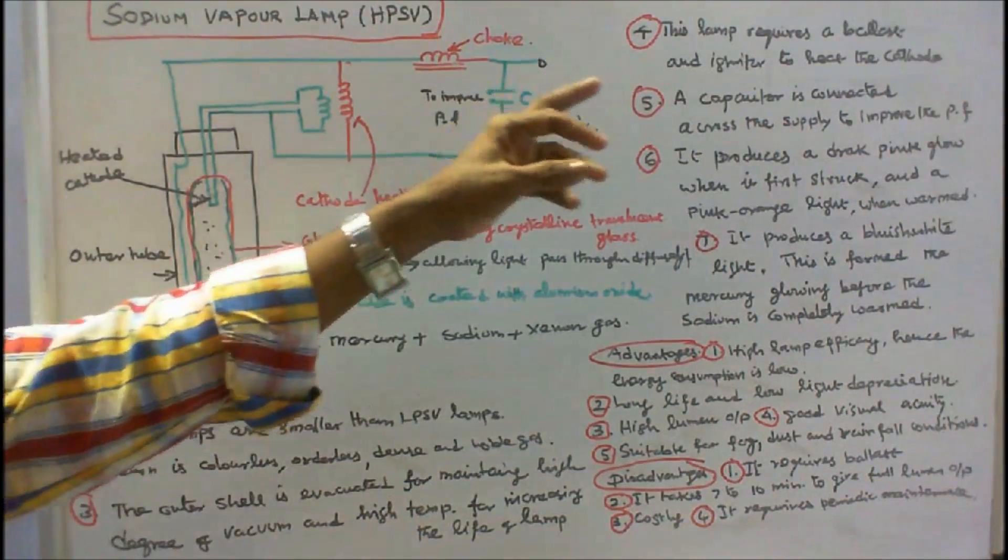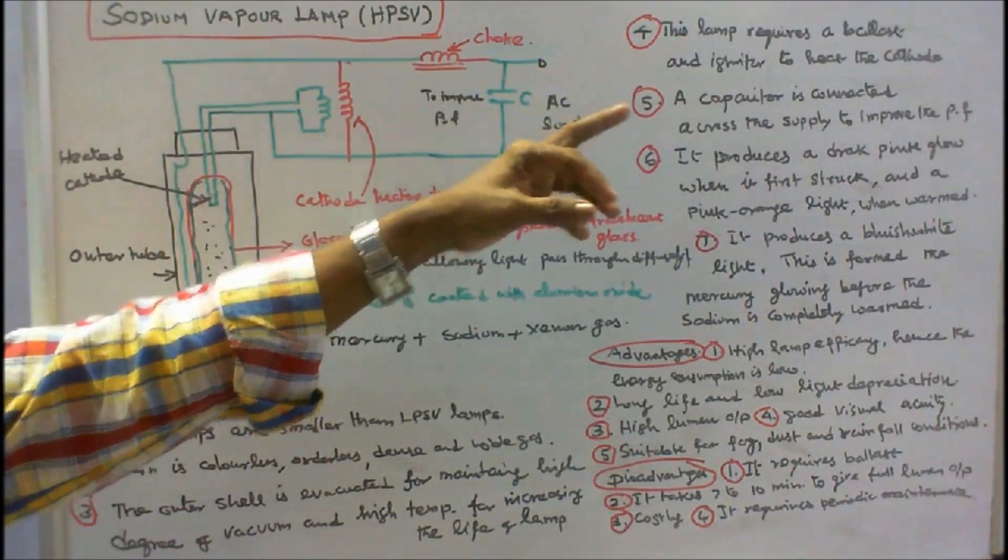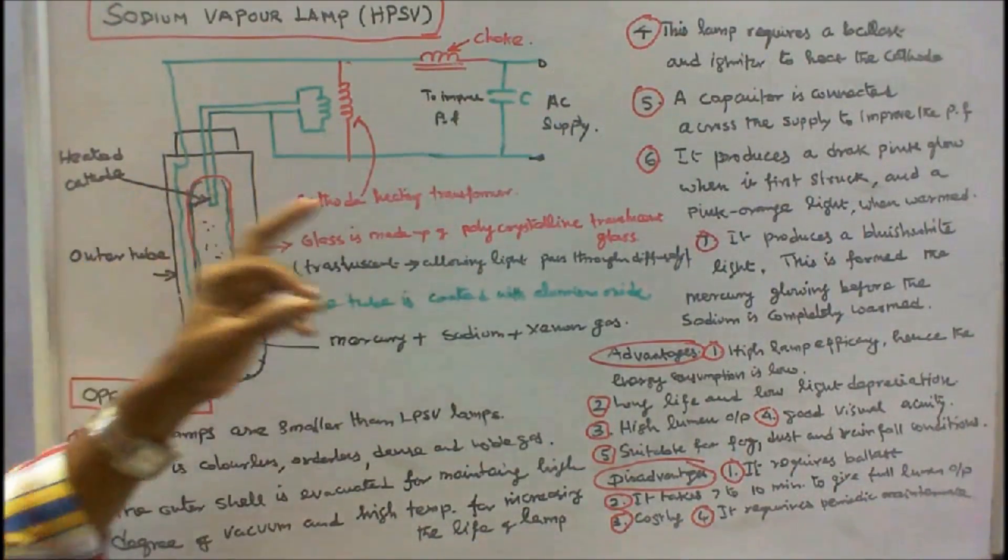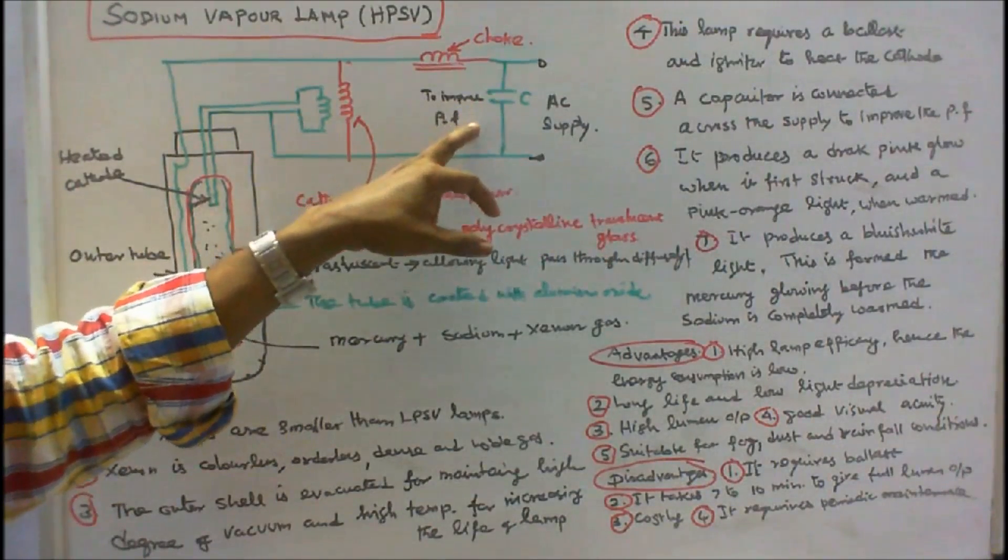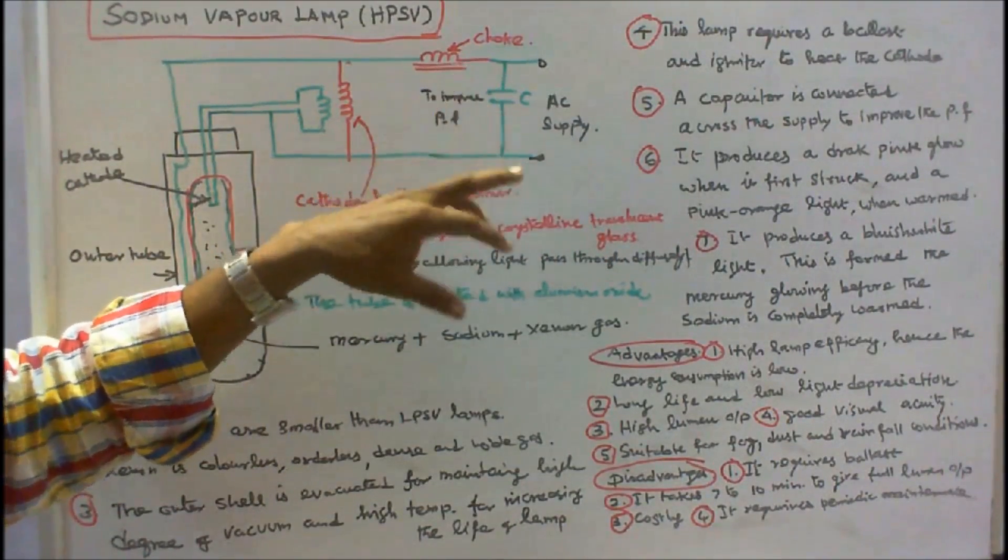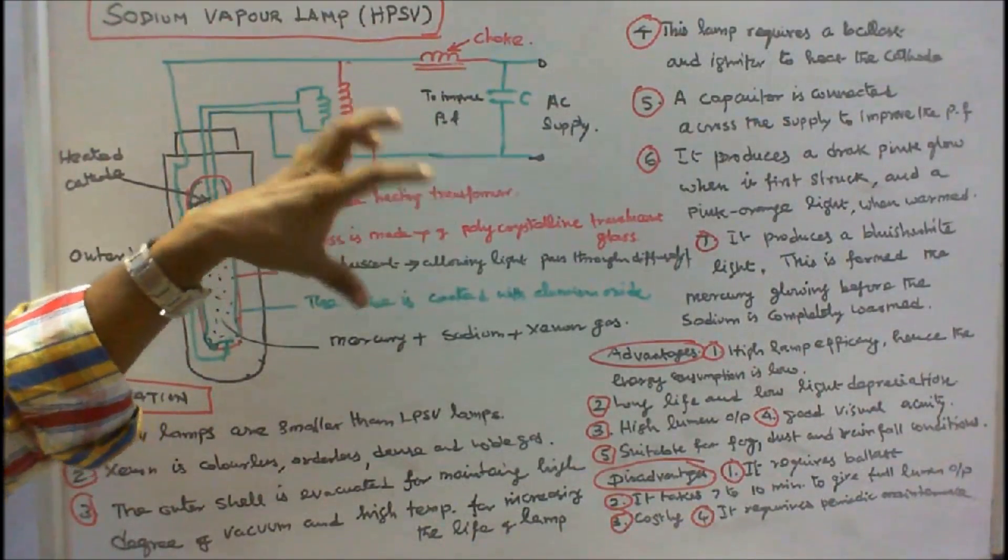This lamp requires a ballast, the igniter to heat the cathode. A capacitor is connected across the supply to improve the power factor. Generally its operating power factor is low.